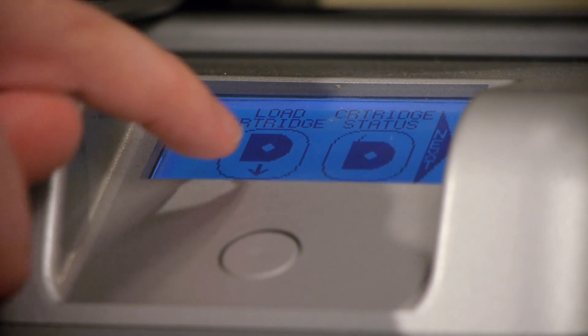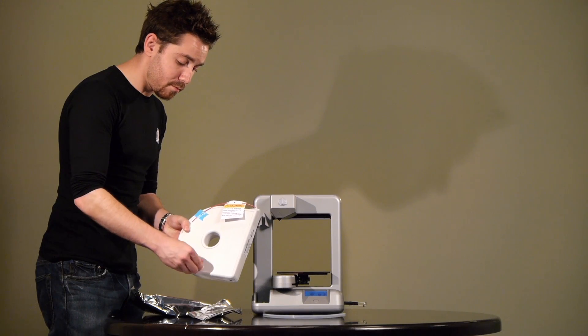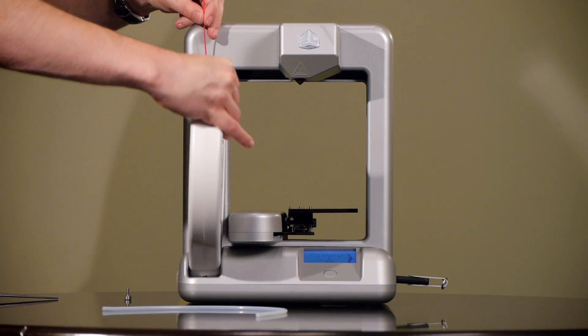Start by going to Setup, then Load Cartridge. Unwrap the cartridge and remove the screw on the side. Press Next, and the print tip will begin to heat up, pushing out any material already in the printer.